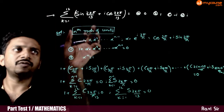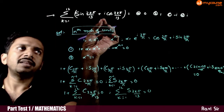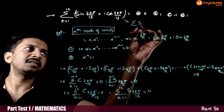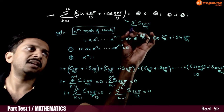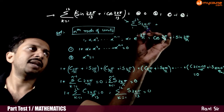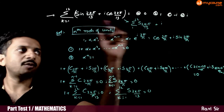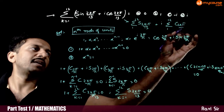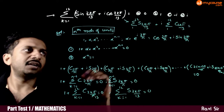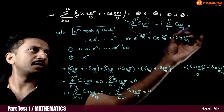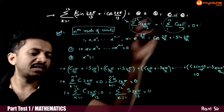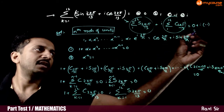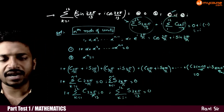Now let us go to the given question. Sigma k equals 1 to 12 of sin(2kπ/13) plus i·cos(2kπ/13). We can separate the sigma: this is sigma of sin(2kπ/13), 1 to 12, plus i times sigma 1 to 12 of cos(2kπ/13). This equals 0 plus i times (minus 1), which equals minus i. So option C is the right answer.